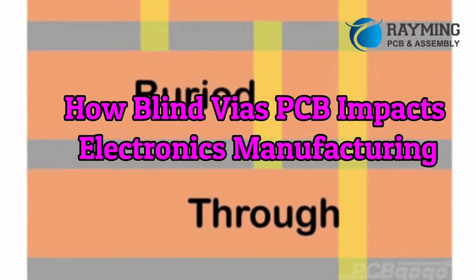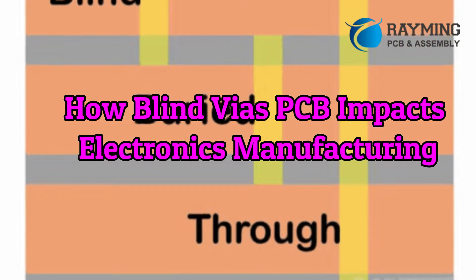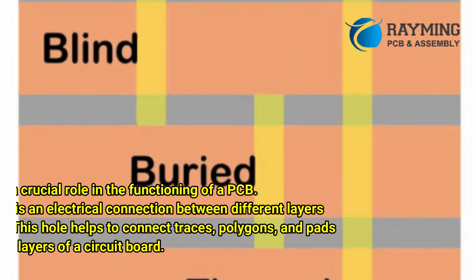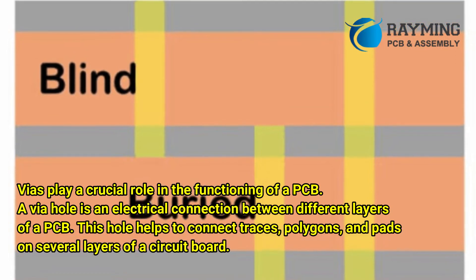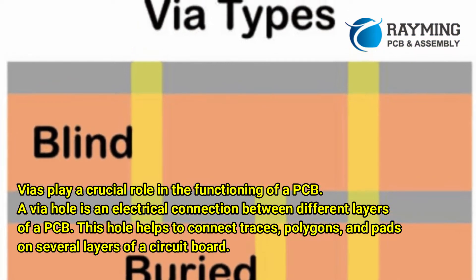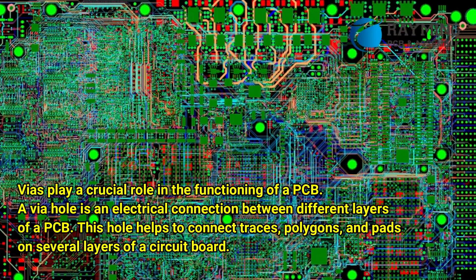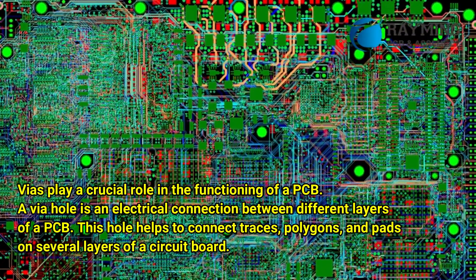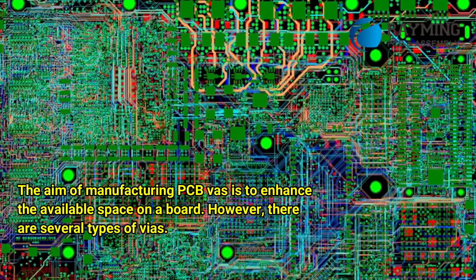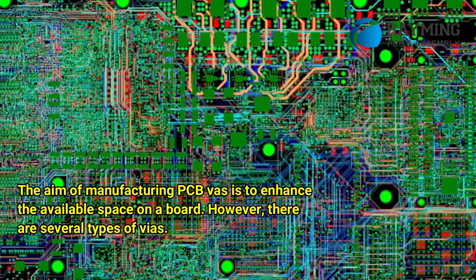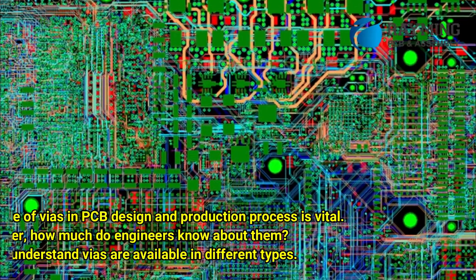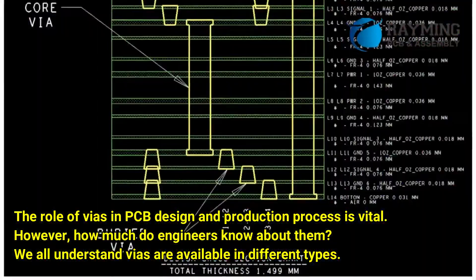How blind vias PCB impacts electronics manufacturing. Vias play a crucial role in the functioning of a PCB. A via hole is an electrical connection between different layers of a PCB. This hole helps to connect traces, polygons, and pads on several layers of a circuit board. The aim of manufacturing PCB vias is to enhance the available space on a board. There are several types of vias, and the role of vias in PCB design and production process is vital.